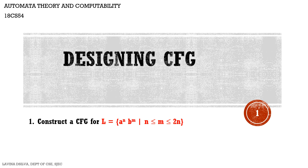Hello students. In this video I will explain how we can construct a context-free grammar for the language L = a^n b^m where n ≤ m ≤ 2n. That is, the range of m is between n and 2n.